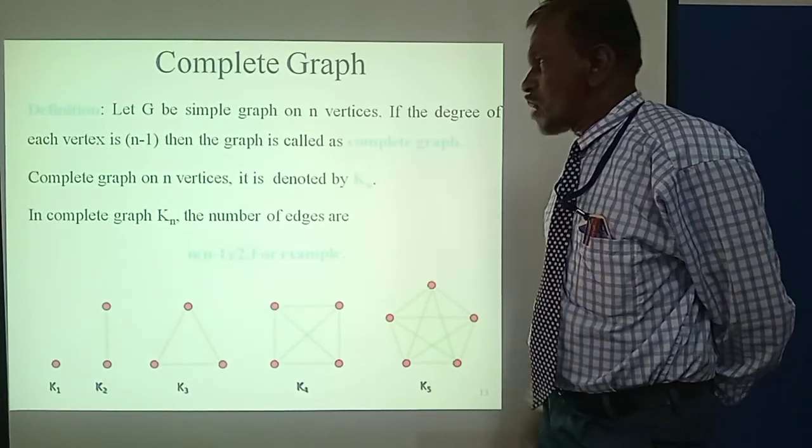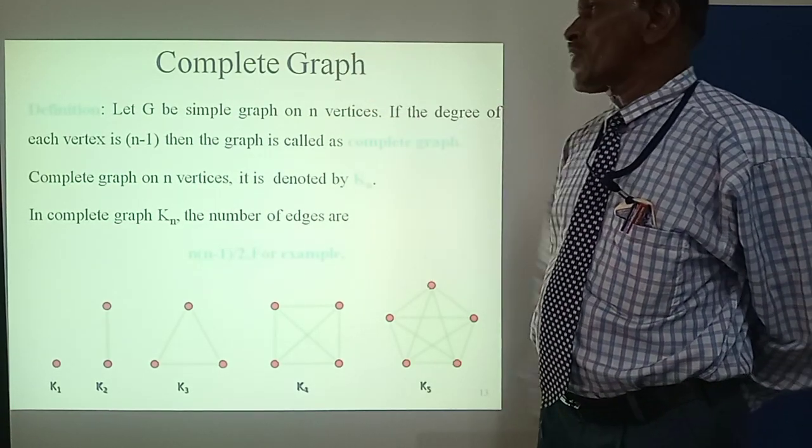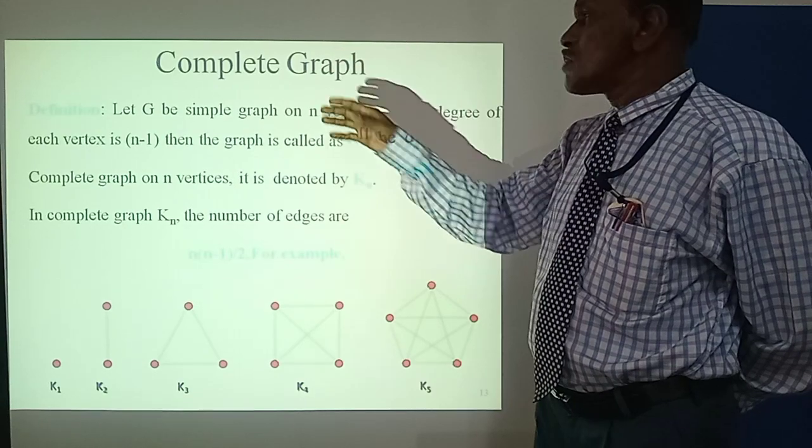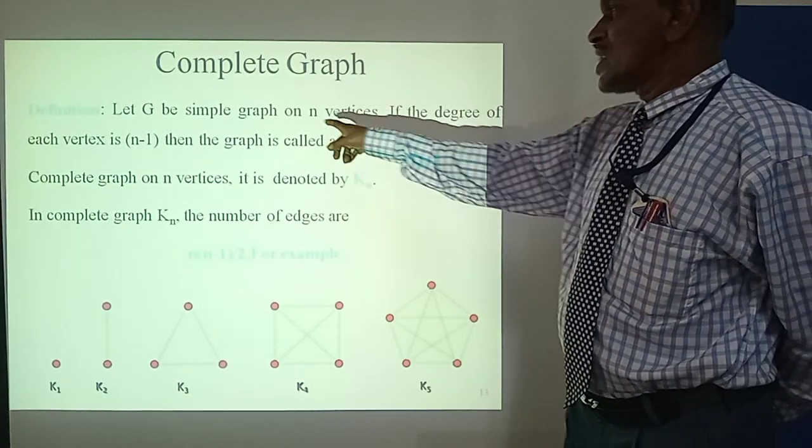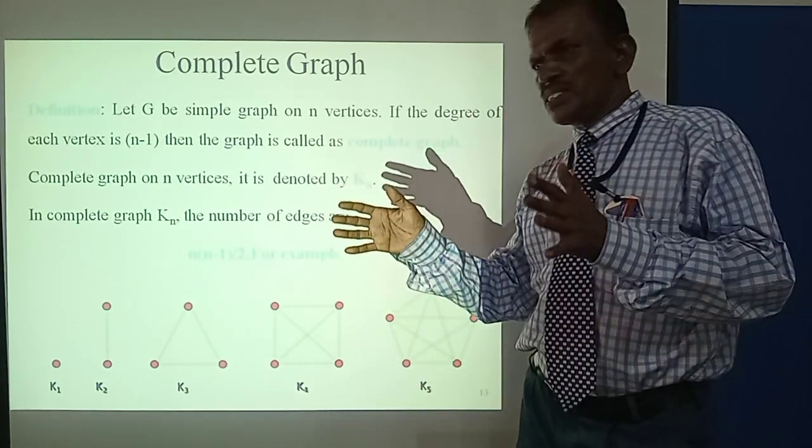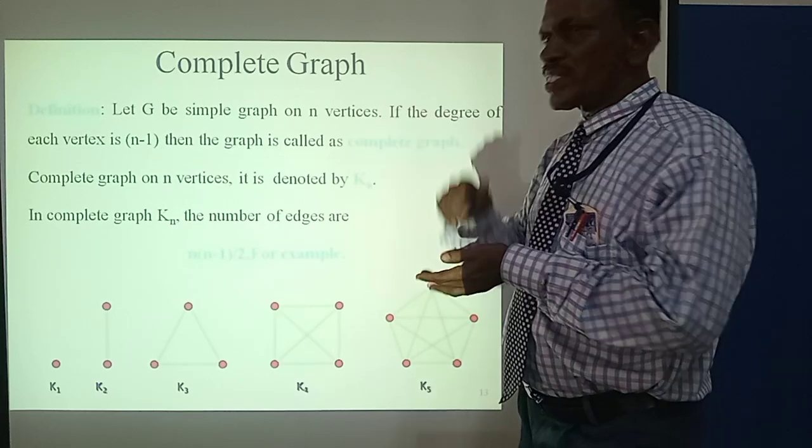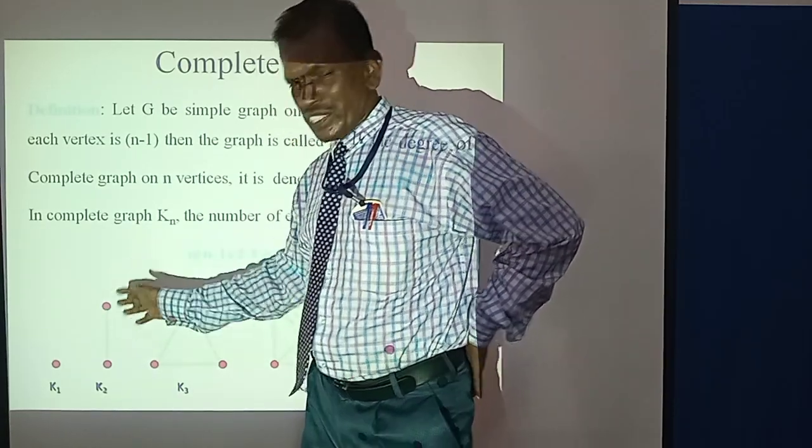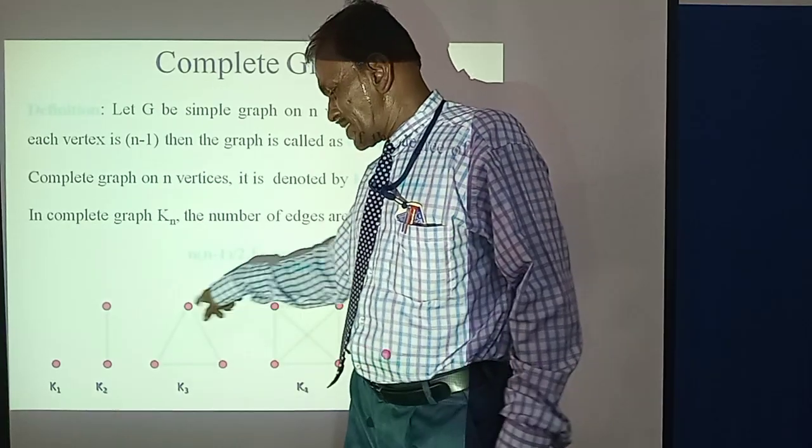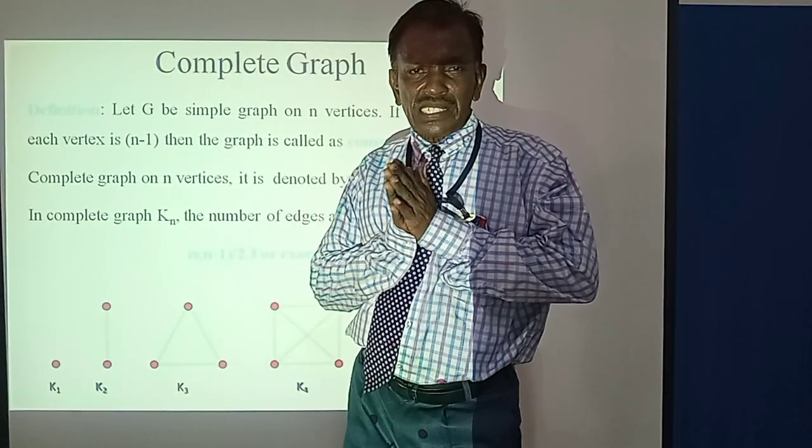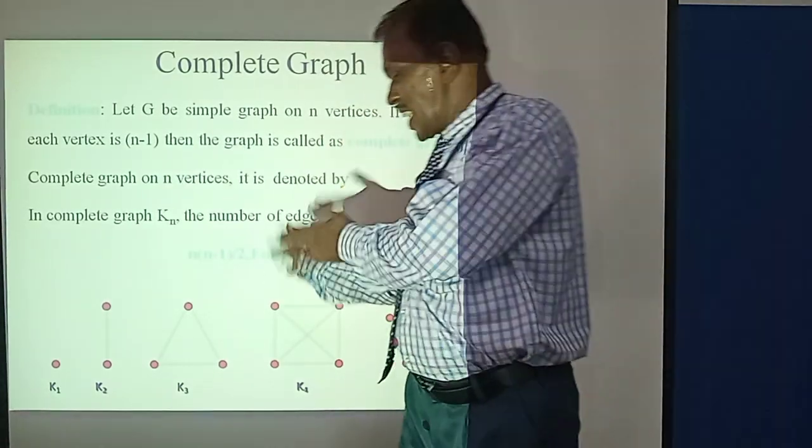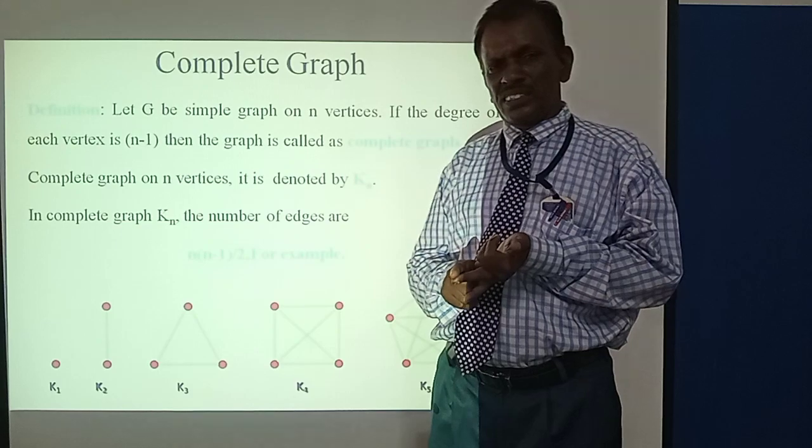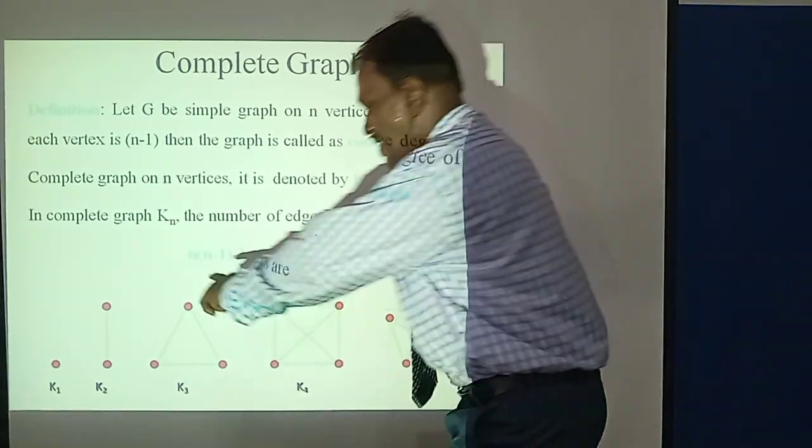Complete Graph. The complete graph is one of the most important types of graphs. Let G be a simple graph with n vertices, where n equals 2, 3, 4, 5, 6, and so on. K1 has vertex 1. K2 has vertices 1 and 2 joined together. K3 has vertices V1, V2, V3 forming a triangle shape. This triangle connects all vertices to each other.